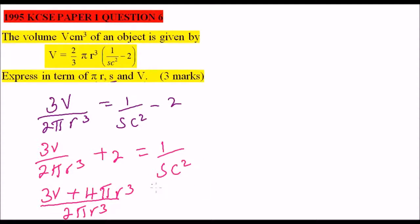This is to help us be able to remove our C from the other side, so this is C squared. From there, let's multiply both sides by S, so you have 1 over C squared, when you multiply this by S, you get 3VS plus 4 pi R cubed S, all this is divided by 2 pi R cubed.